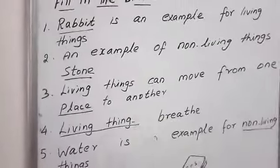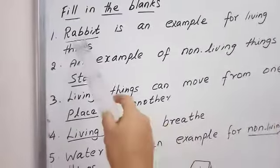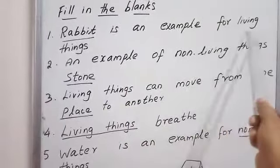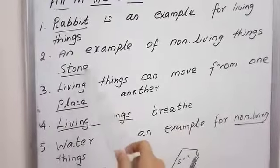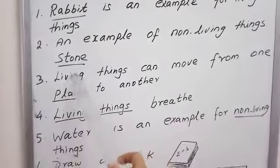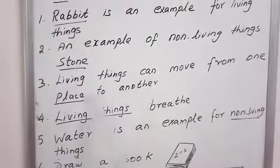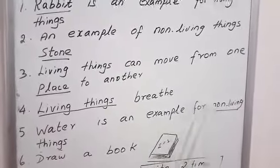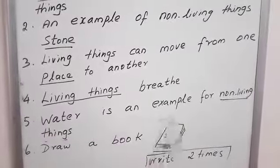Shall we read it again? Rabbit is an example of living things — R-A-B-B-I-T. An example of non-living things: you can write whatever you like — stone, pen, pencil, paper, everything. Living things can move from one place to another, and living things can breathe. Water is an example of non-living things. You should draw a book.